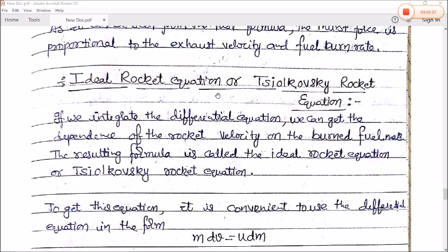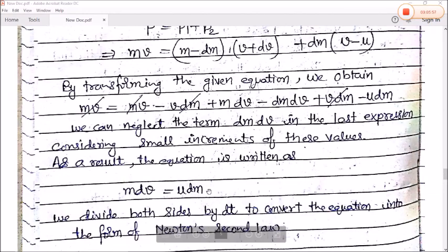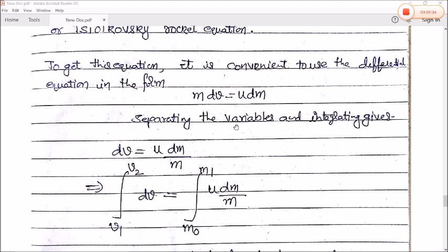Rocket equation or Tsiolkovsky rocket equation. If we integrate the differential equation, we can get the dependence of rocket velocity on the burnt fuel mass. The resultant formula is called ideal rocket equation or Tsiolkovsky rocket equation. To get this equation, we solve M*dv = u*dm, separating the variables, so dv = u*dm/M.